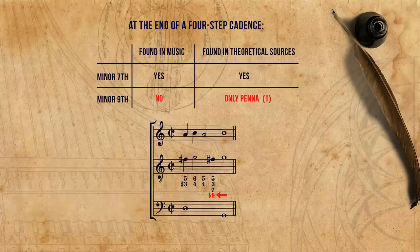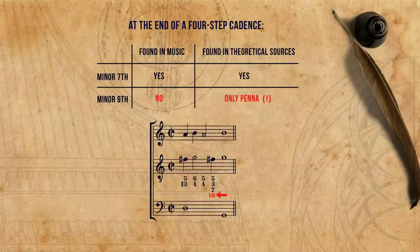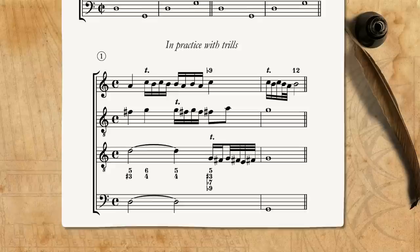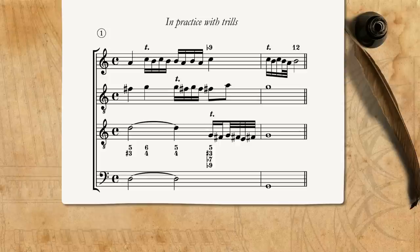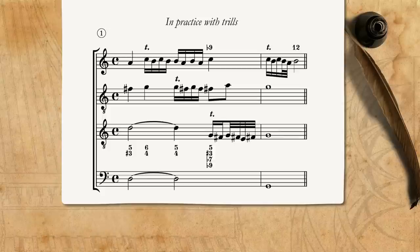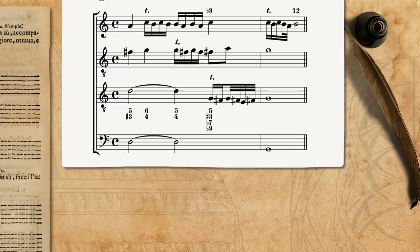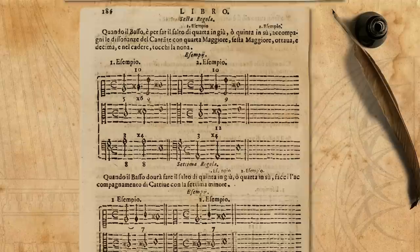The minor 9th is something that seems to be found only in the realm of performance practice of Basso Continuo, and is described only in this treatise by Penna. Then, on top of this, Penna also includes an additional realisation with trills, made with four parts and additional figures. I'm actually not at all sure how these trills should be executed — you are welcome to give it a go yourself.